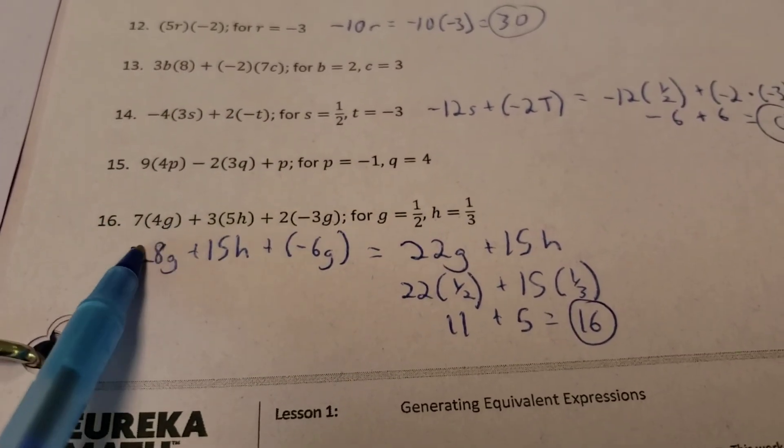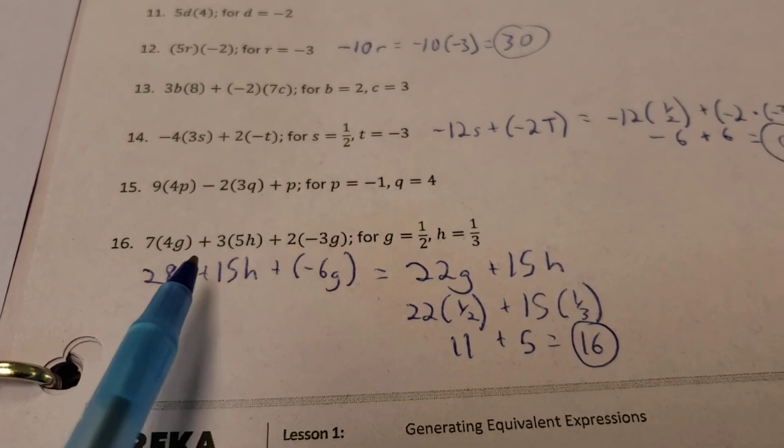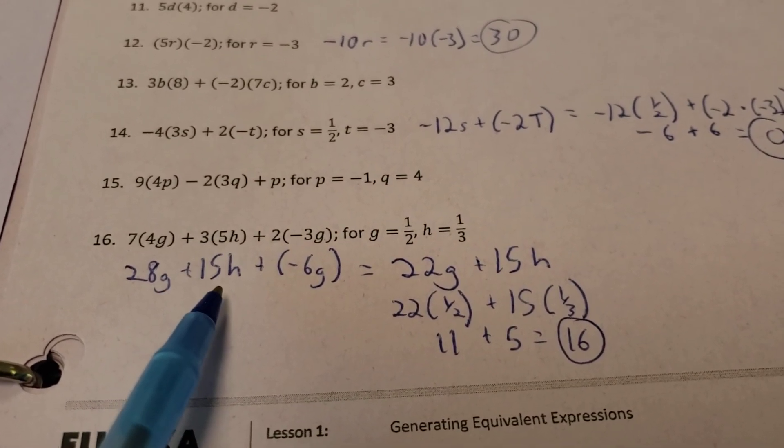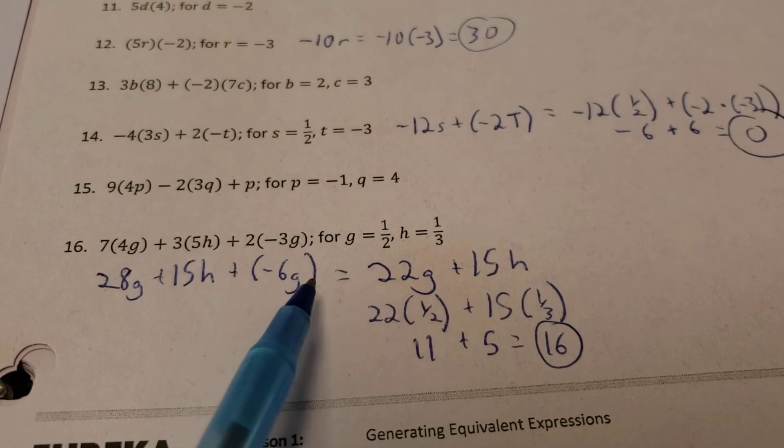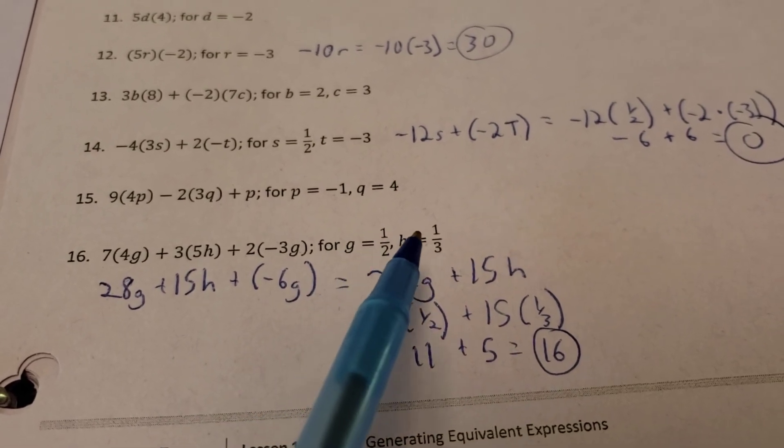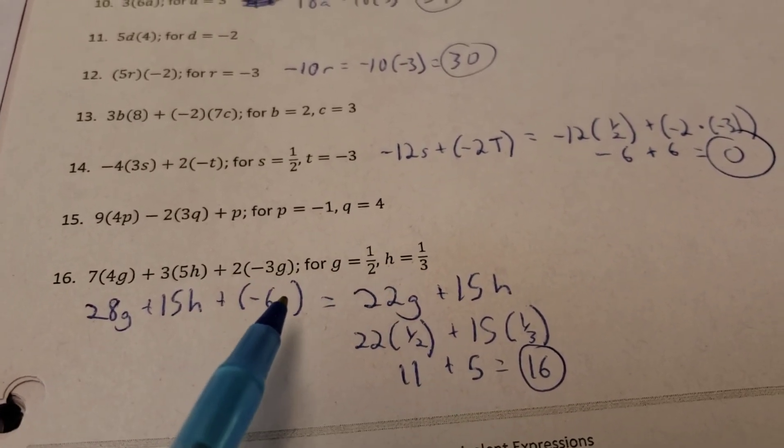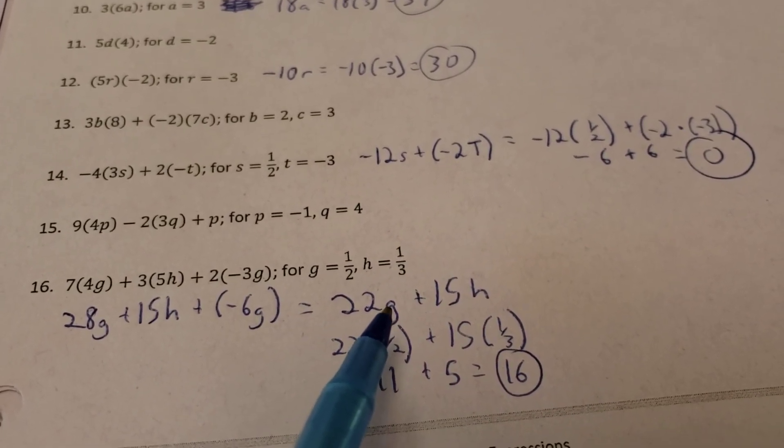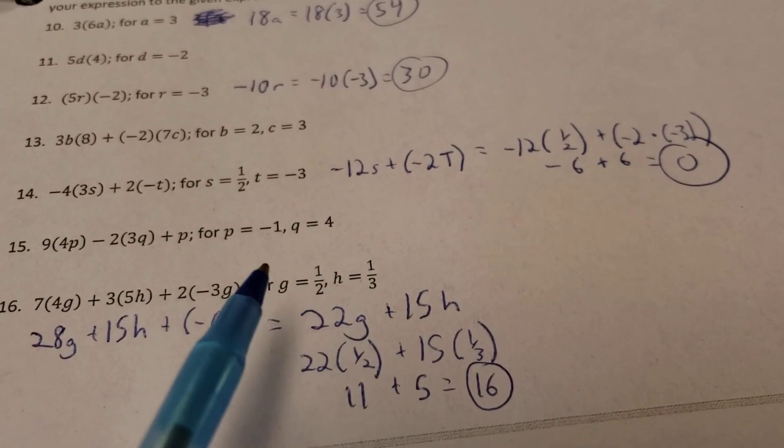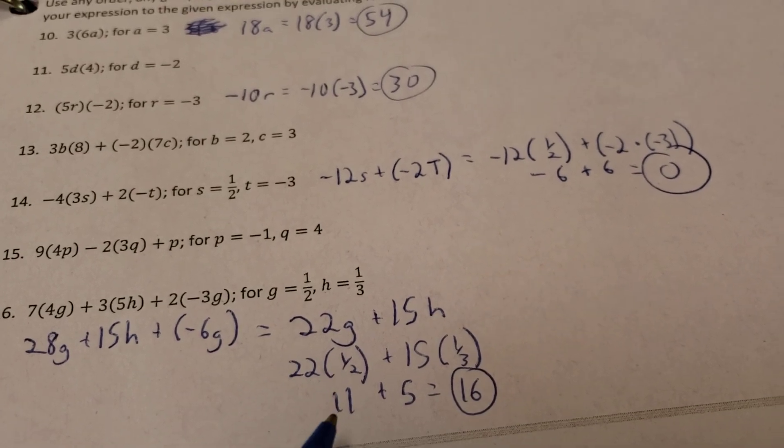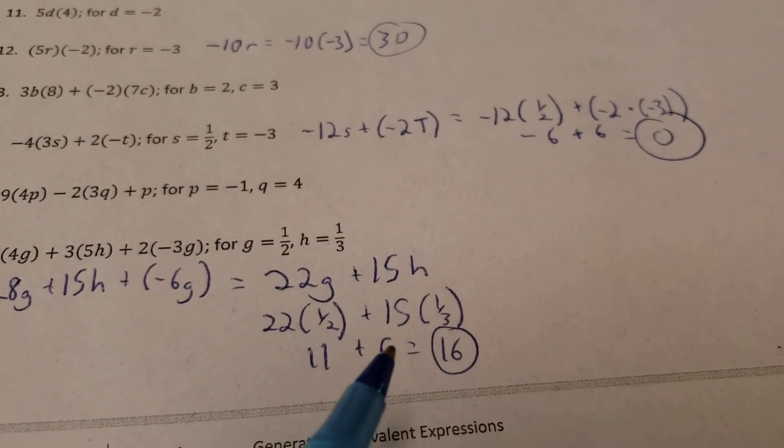Alright, make my last one here. 7 times 4 gives me 28 of the g's. And 3 times 5 gives me 15 of the h's. 2 times a negative 3 gives me negative 6 of the g's. And then now I can take a look at these and evaluate in just a second. Because before I can evaluate, I got some g's that I can total up together here. 28g minus 6g gives me 22 of the g's, plus the 15h. We'll keep the g's and h's just separate. Now I can actually evaluate for these. So, 22 times a half, well, half of 22 is 11. And then 15 times a third or a third of 15 is 5. And 11 plus 5 gives me 16.